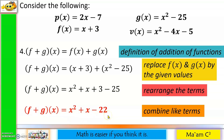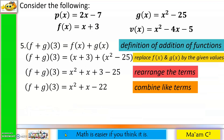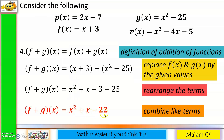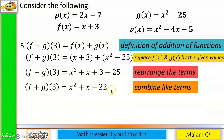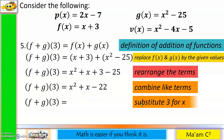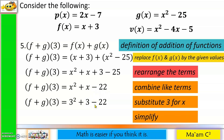Take note of this answer: x² + x − 22. Now let's evaluate (f + g)(3). Using our previous answer, we substitute 3 for x: 3² + 3 − 22. Simplifying: 3² = 9, then 9 + 3 = 12, and 12 − 22 = −10. So the answer for (f + g)(3) is −10.